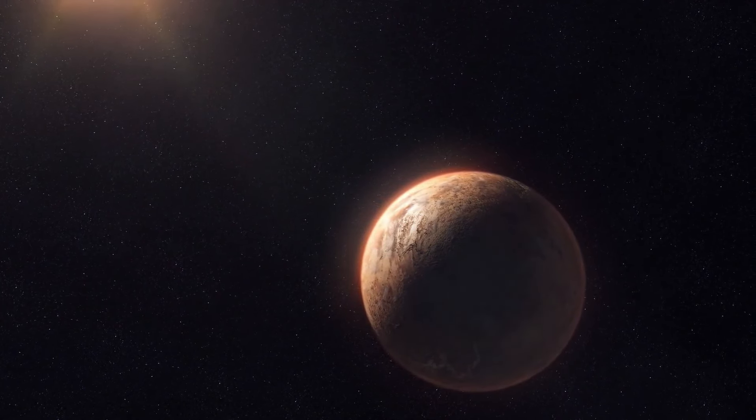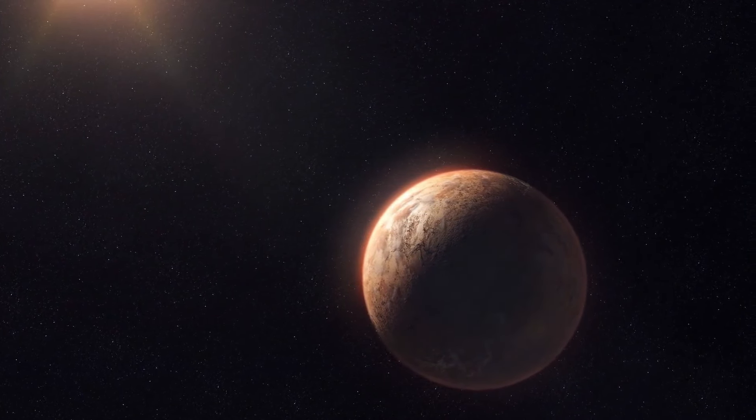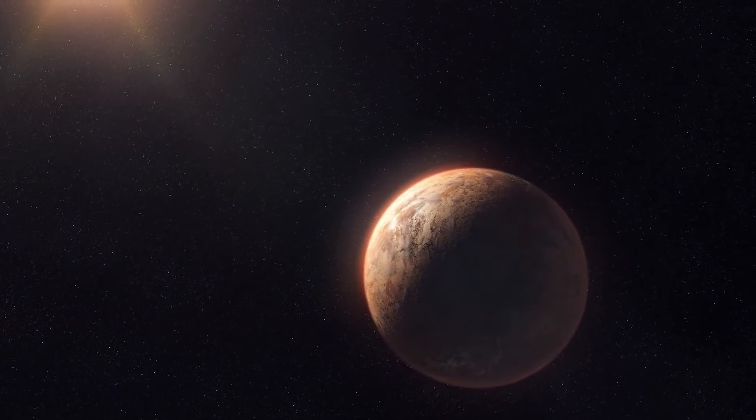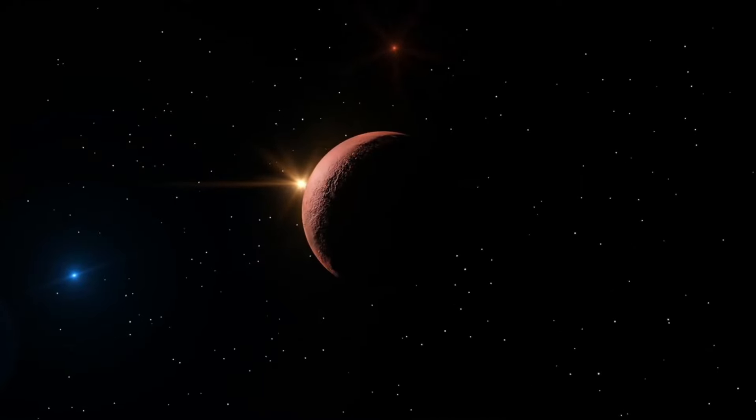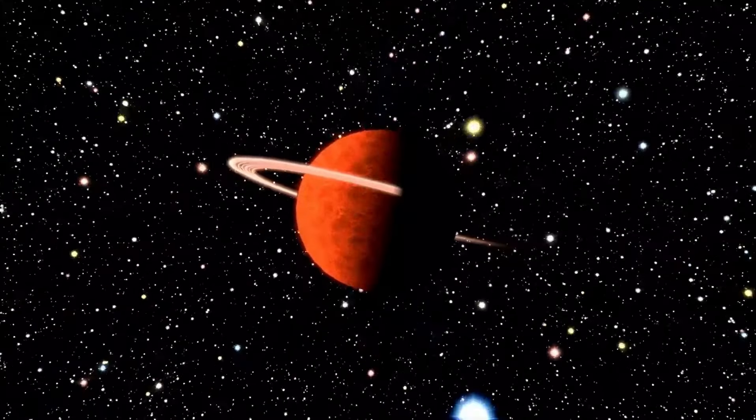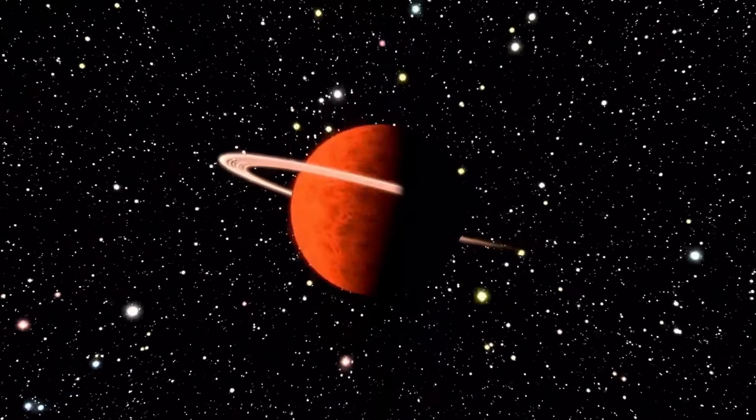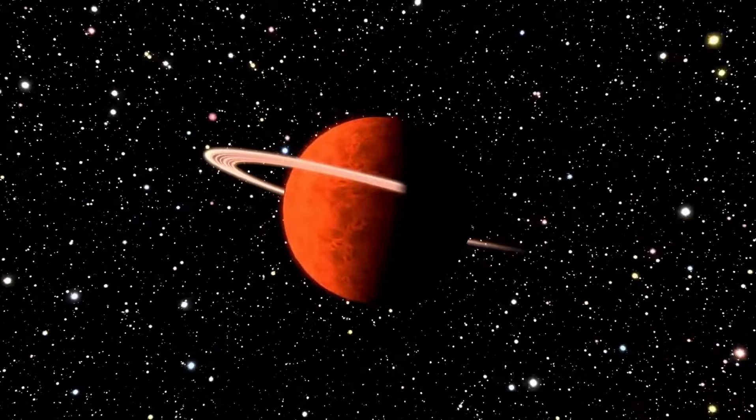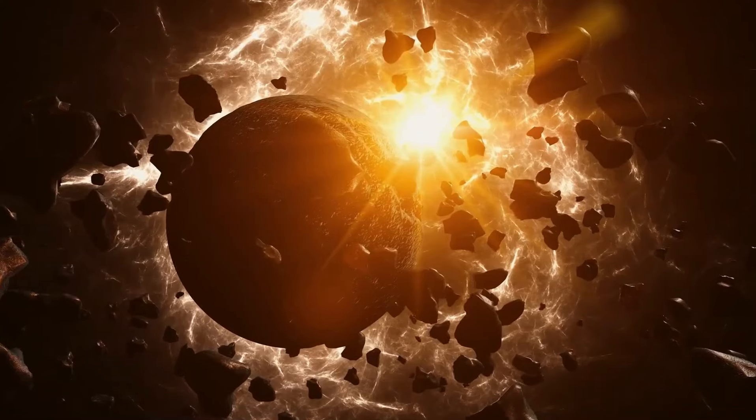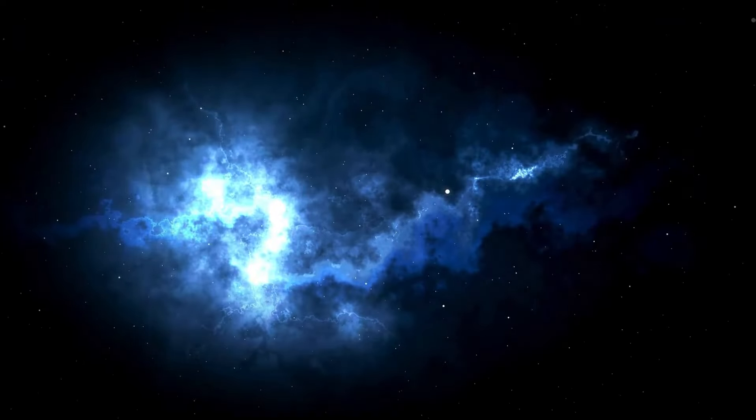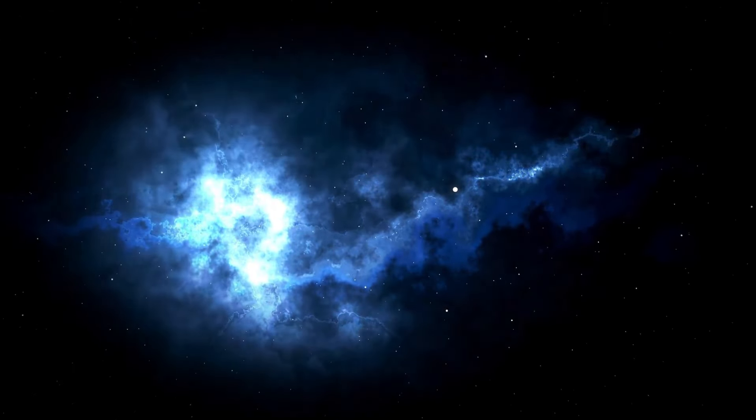The James Webb Space Telescope, JWST, is a testament to human ingenuity and perseverance. The head of NASA recently announced that the telescope, our new eye into the cosmos, has captured a groundbreaking image. This photograph reveals a secret hidden within the farthest reaches of our cosmic neighborhood: life on a world known as Proxima B.